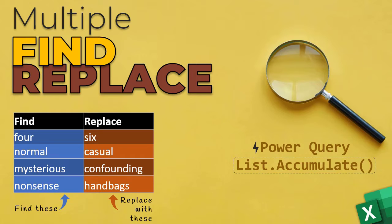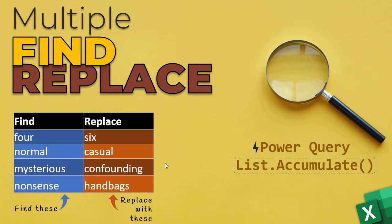We could use simple Excel functions like REPLACE or SUBSTITUTE if you have a single word you would like to substitute with something else. You could also nest them one inside another if you want to replace two or three words. But what if you have a piece of text or a range with different text values, and in each you want to replace all the values in a find column with the corresponding replace column? Such replacements are tricky to achieve with built-in Excel functions alone.